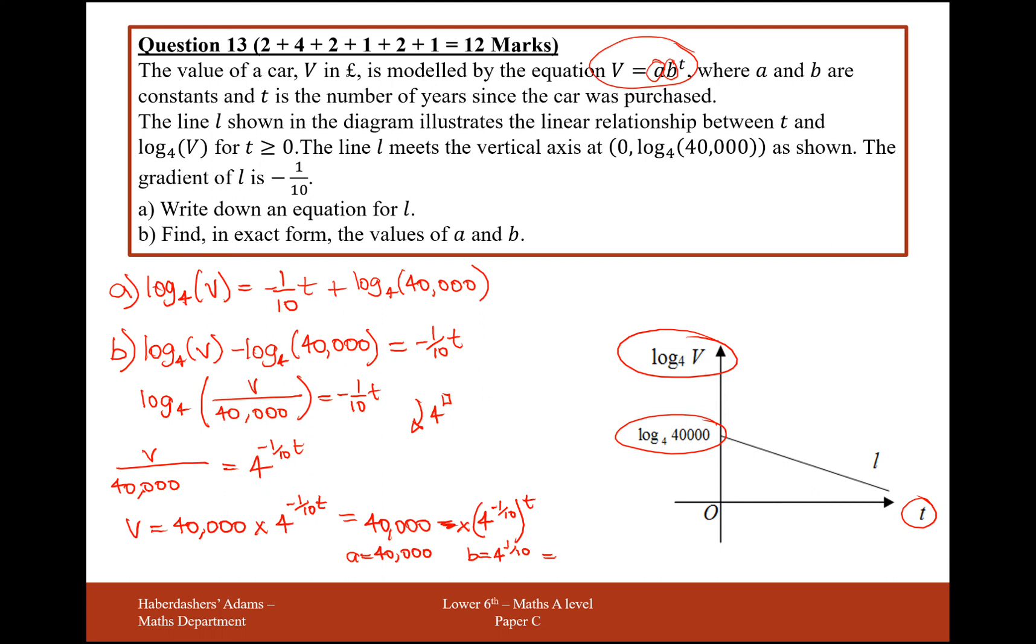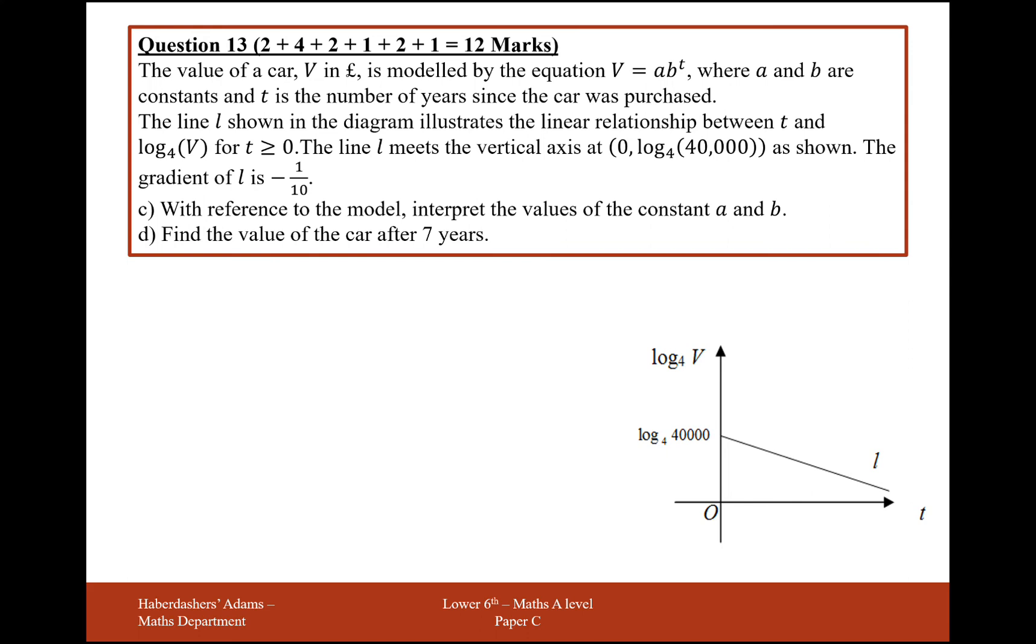So here, final answer now is 40,000 for a, and b is 4 to the power of minus a tenth. What's going to be useful to know in the future is the value of that, 4 to the minus tenth. Get my calculator out, and that's 0.87055, it does keep on going.